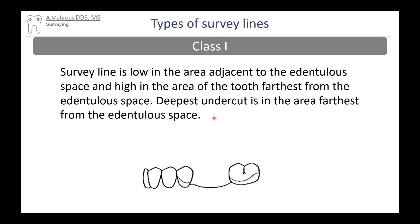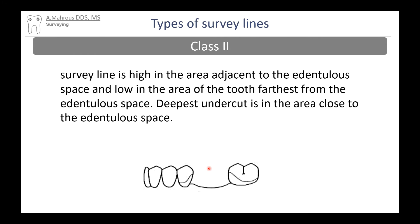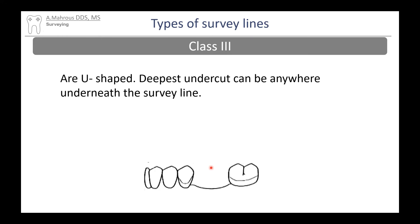A class 1 survey line is a survey line where it is very low close to the edentulous space and higher away from the edentulous space. Same is true for both sides. A class 2 is just the opposite, the survey line where it's highest closest to the edentulous space and lowest further away from it. A class 3 is a survey line that is even on both sides of the tooth, close and away from the edentulous space.